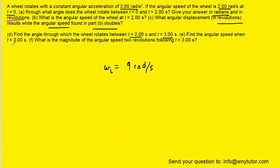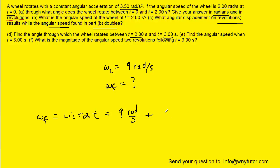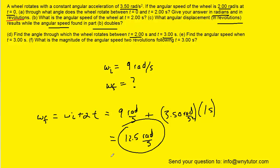To find the angular speed at the time of three seconds, we use the rotational kinematics equation. We take the initial angular velocity of nine radians per second and add it to the acceleration of 3.5 radians per second squared multiplied by a time of one second. This gives us 12.5 radians per second, which is the correct answer to part E.